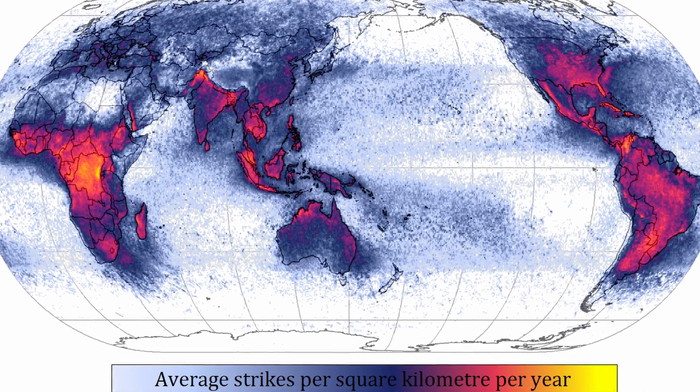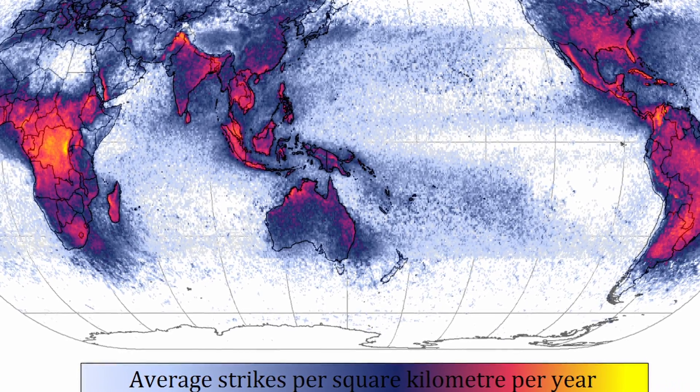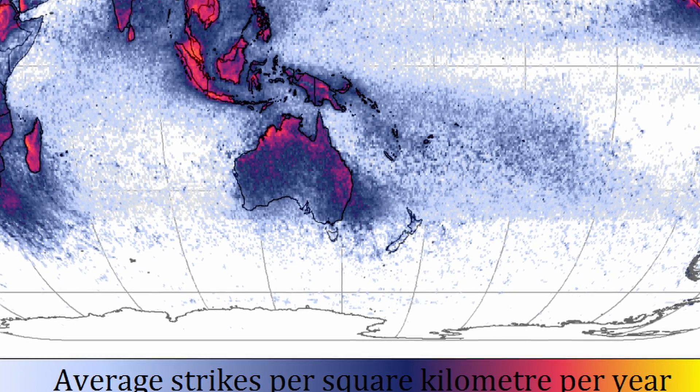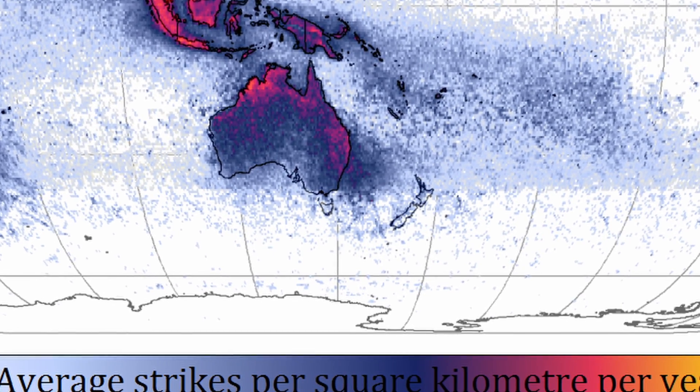Now here's a question for you: why is there no lightning in Antarctica? If you look at a map of lightning strikes, you'll see a big glaring gap in the polar regions. But to know why, we've got to backtrack to think about where lightning actually comes from.